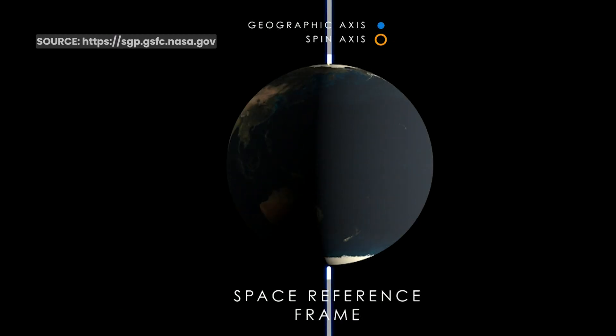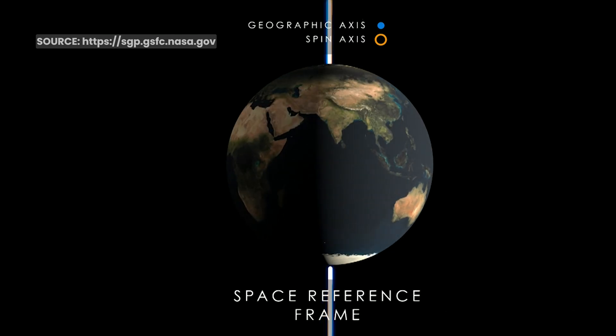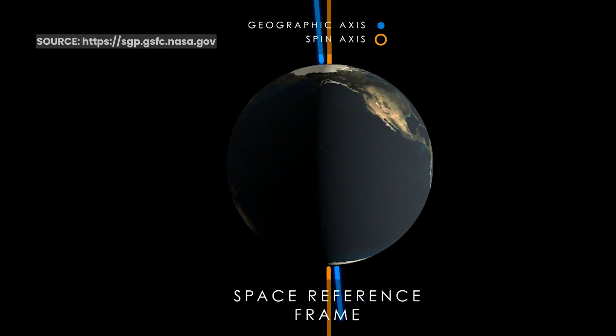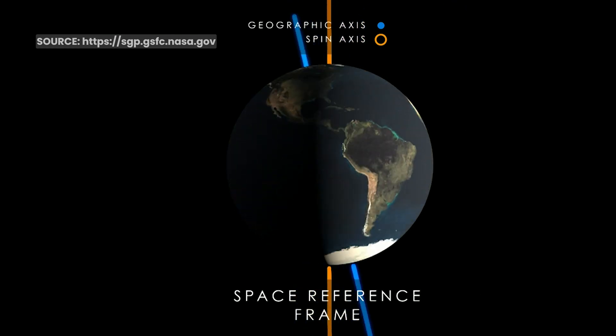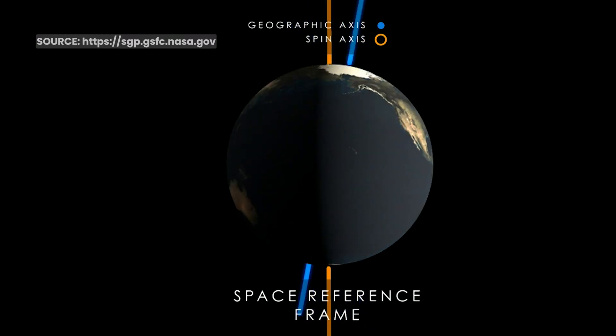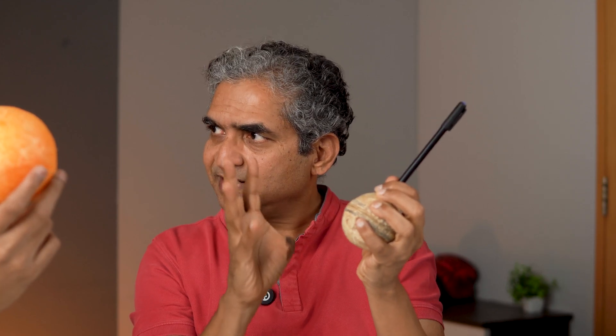Now, the problem with the earth's axis of rotation is that it is itself rotating. Like a spinning top — if you disturb it slightly, the top's spin axis itself starts to rotate slowly. The same thing happens with Earth: it is spinning on its axis, but that axis is itself slowly rotating. This happens very slowly, and the ancients did not know about it.